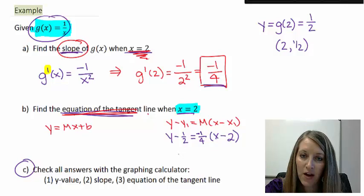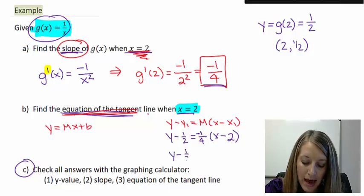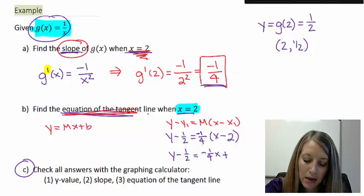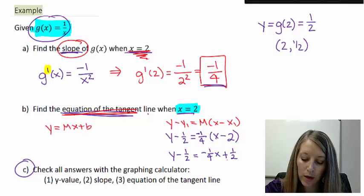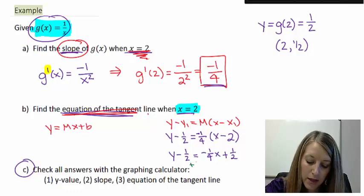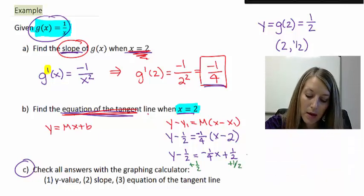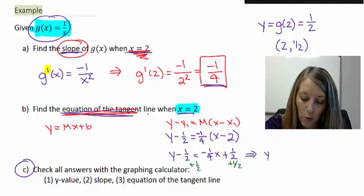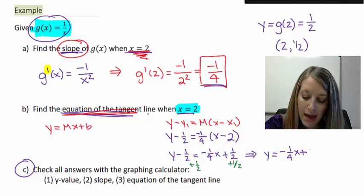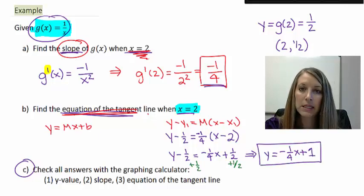And all I have to do is simplify this here. So I have y minus 1 half equals distribute my negative 1 fourth through, negative 1 fourth x plus negative 1 fourth times 2. My 2's cancel out and my negatives cancel out. So that gives me 1 half. If I move this 1 half to the other side, that gives me my answer of y equals negative 1 fourth x plus 1 half and 1 half totals up to give me 1. So there's my equation of my tangent line.